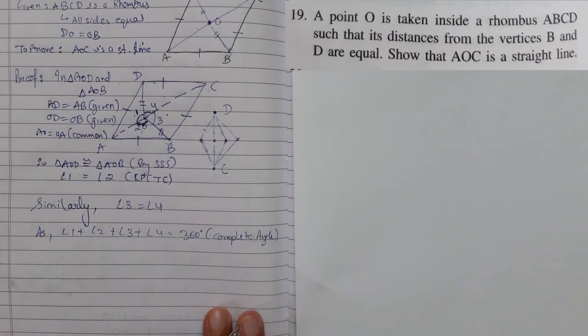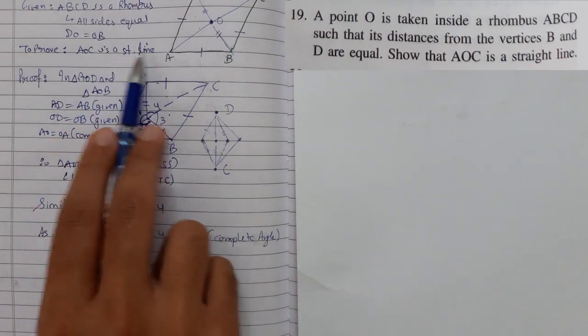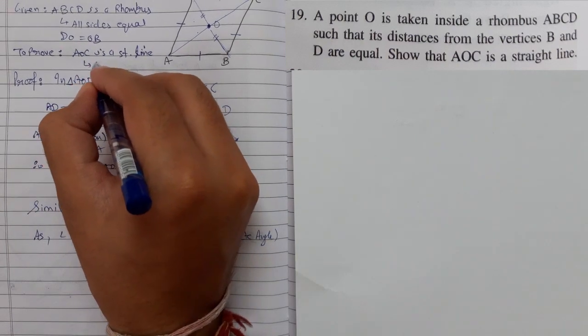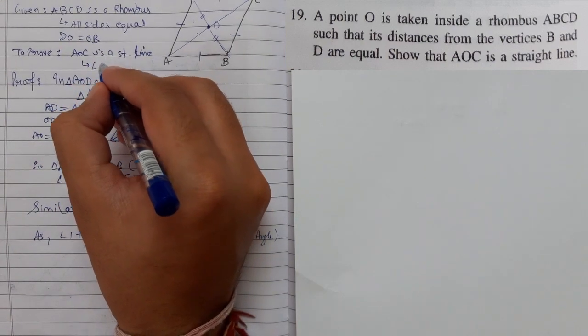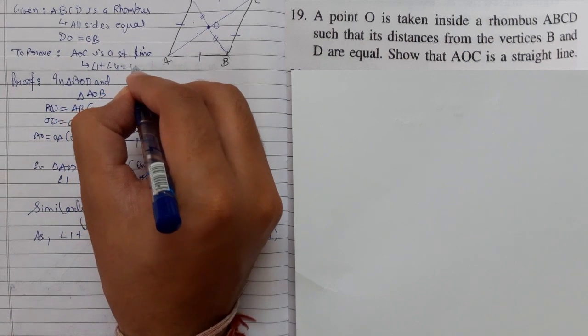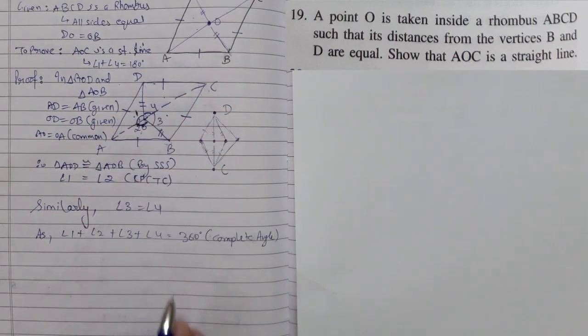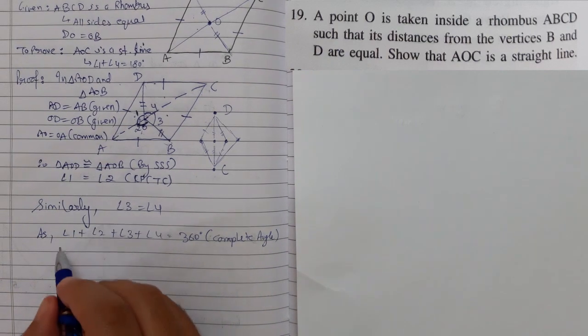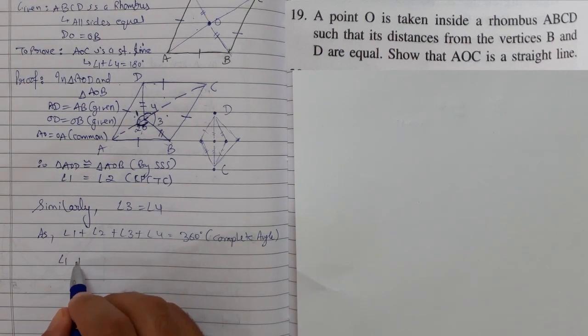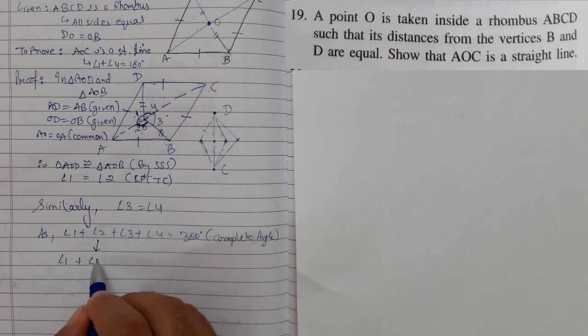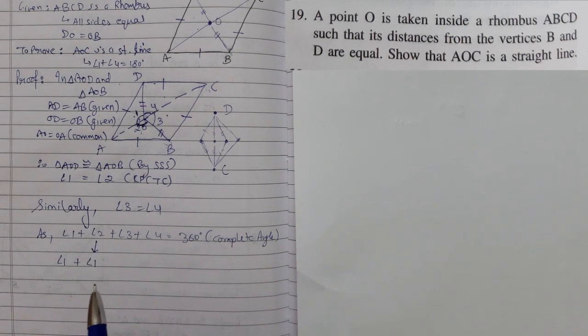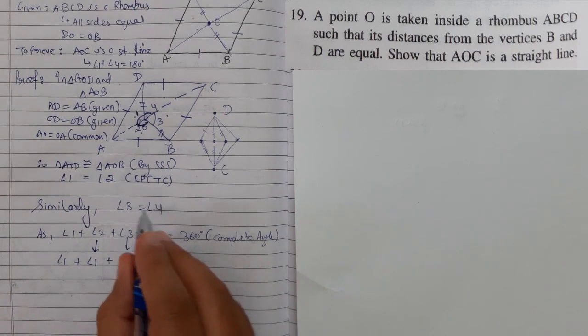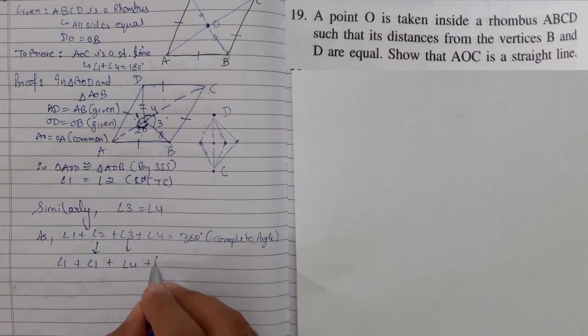Now stay focused on what we need to prove. We need to prove that it is a straight line. How to prove that? Angle 1 and 4 is 180 degrees. Angle 1 plus angle 4 is 180 degrees. We should prove this thing. So stay focused. Angle 1 is equal to angle 2, so angle 1 remains angle 1. And angle 2 becomes angle 1 because I need to be at angle 1. And angle 3 becomes angle 4.